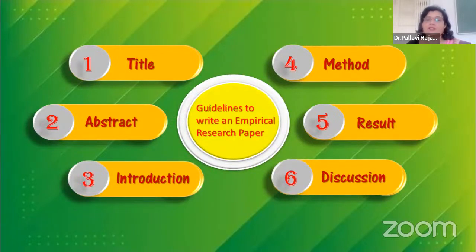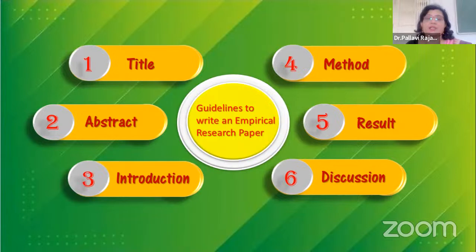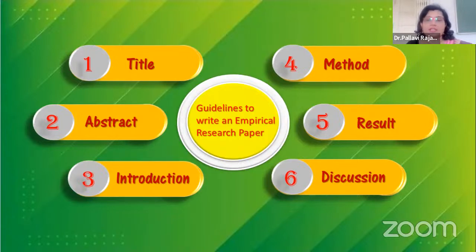The next section is the method. The method section should describe the research procedure. One of the basic criteria for judging the completeness of the method section is to analyze whether another investigator could take the description and redo the investigation.